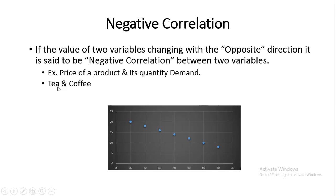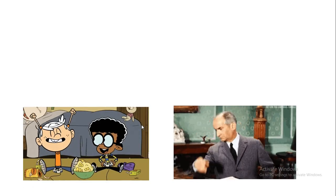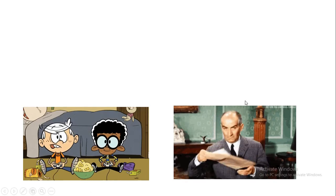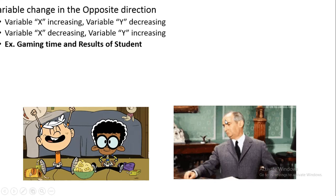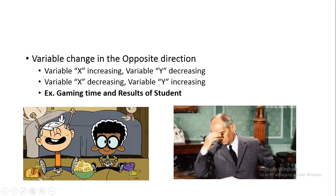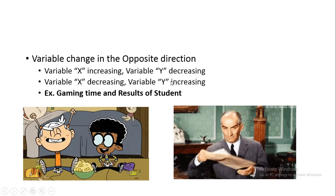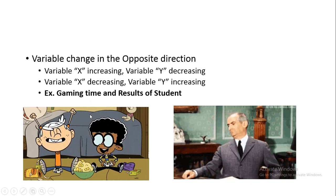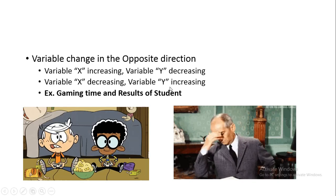Another example is demand for tea and coffee: when a person is having tea, that person will demand less coffee. Another example is game time and your results — the more games you play, your results will be poor. So when variable x, which is your gaming time, increases, variable y, which is your result, will decrease. But if your gaming time decreases, then your result will increase. That is called negative correlation.